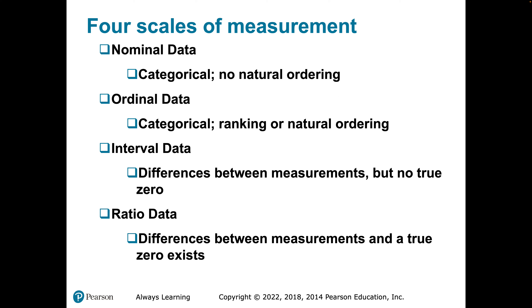Both are categorical, but nominal data has no natural ordering. That would be something like political affiliation, religious affiliation, or gender.